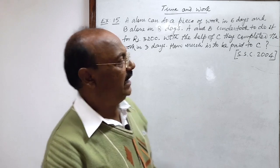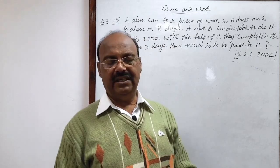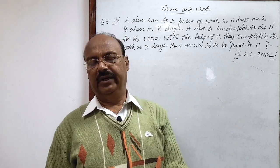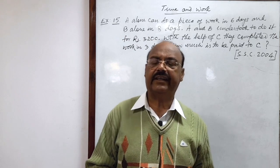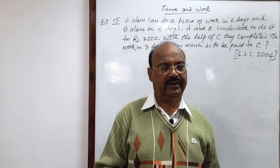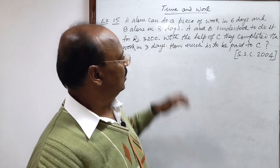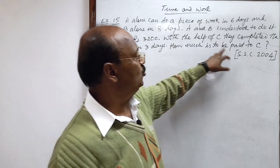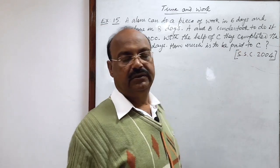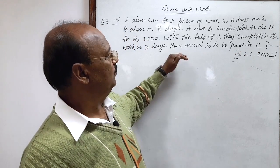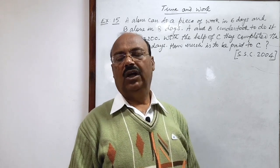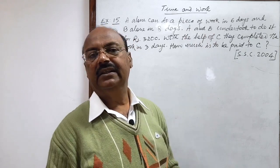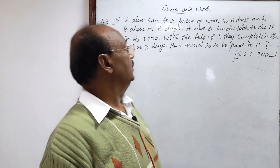We know that ratio of wages is equal to ratio of amount of work done because wages are directly proportional to amount of work done. So for solving this question we have to find out how much is to be paid to C. We have to find out the ratio of work done by A, B and C.